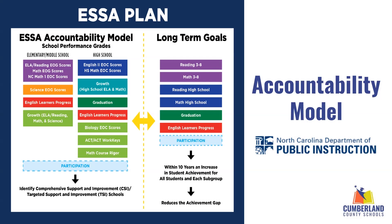All of those are included in the achievement portion, and growth is measured at each of those levels — elementary, middle, and high school. Those components are used to calculate the school performance grade. Growth is measured using EVOS, a value-added growth model that measures expected progress against actual progress. These measures also align with the school's long-term goals. Participation can also be a factor: schools are required to assess 95% of their students, and failure to meet this could count against the school negatively.